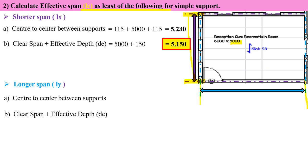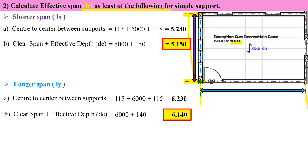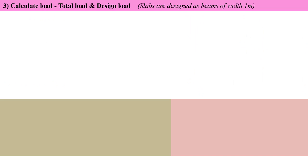For the longer span: Condition A (center-to-center) = 6230 mm = 6.230 m. Condition B (clear span + effective depth) = 6000 + 140 = 6140 mm = 6.140 m. The lesser value is 6.140 m. We select the least of both conditions for each span.